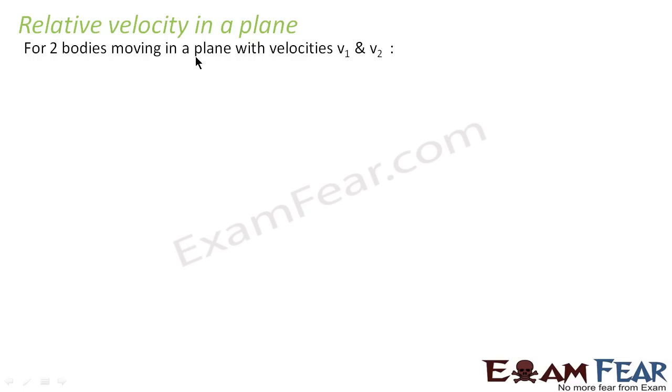For two bodies moving in a plane with velocities v1 and v2, if they are represented by vectors, velocity of 1 relative to 2 is denoted by v12. v12 means velocity of 1 with respect to 2, that is equal to v1 minus v2. Similarly velocity of 2 relative to 1, that is v21, is equal to v2 minus v1.